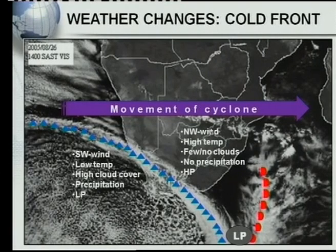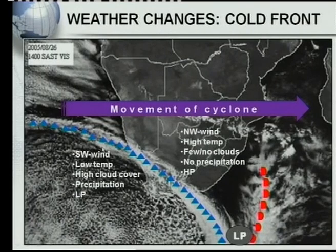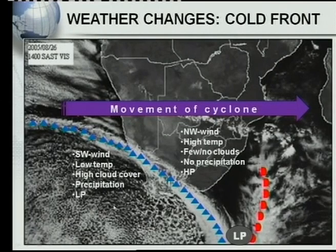Firstly, a northwesterly wind changes into a southwesterly wind. High temperature in front of the front, low temperature behind — when a cold front moves over an area, the temperature will drop. Bear in mind the characteristics of the cyclone — in that area we would usually find our cold air, and that's the reason why the temperature drops. If you look at the satellite image again: few or no clouds in front of the cold front, and high density cloud cover behind. Of course, we'll have no precipitation where there are very few clouds. Here we've got high pressure; here we've got low pressure.